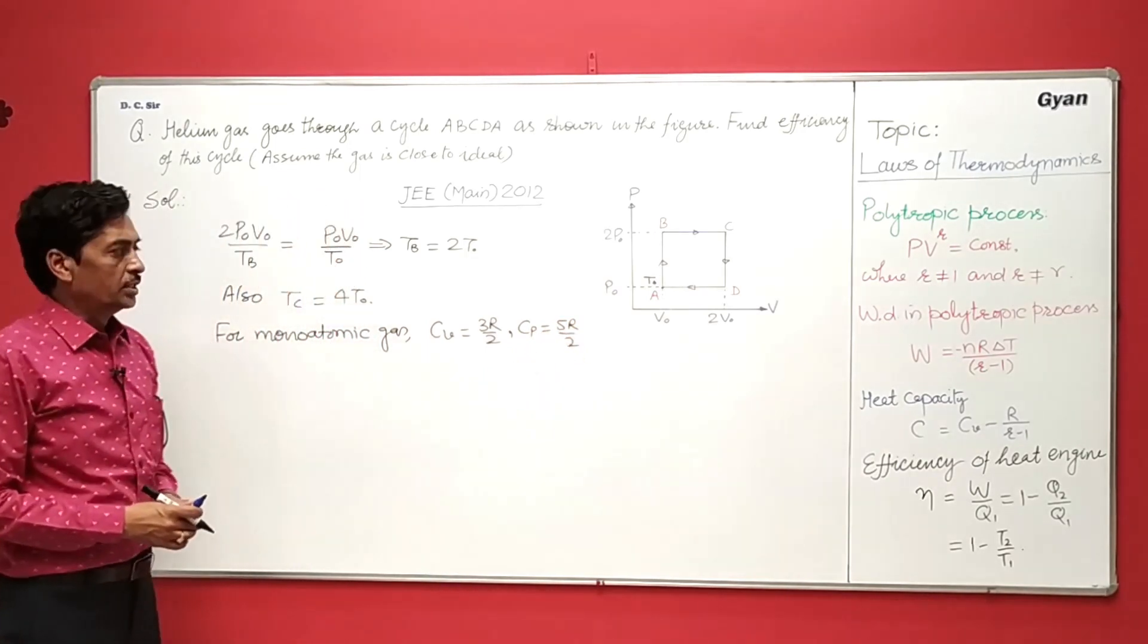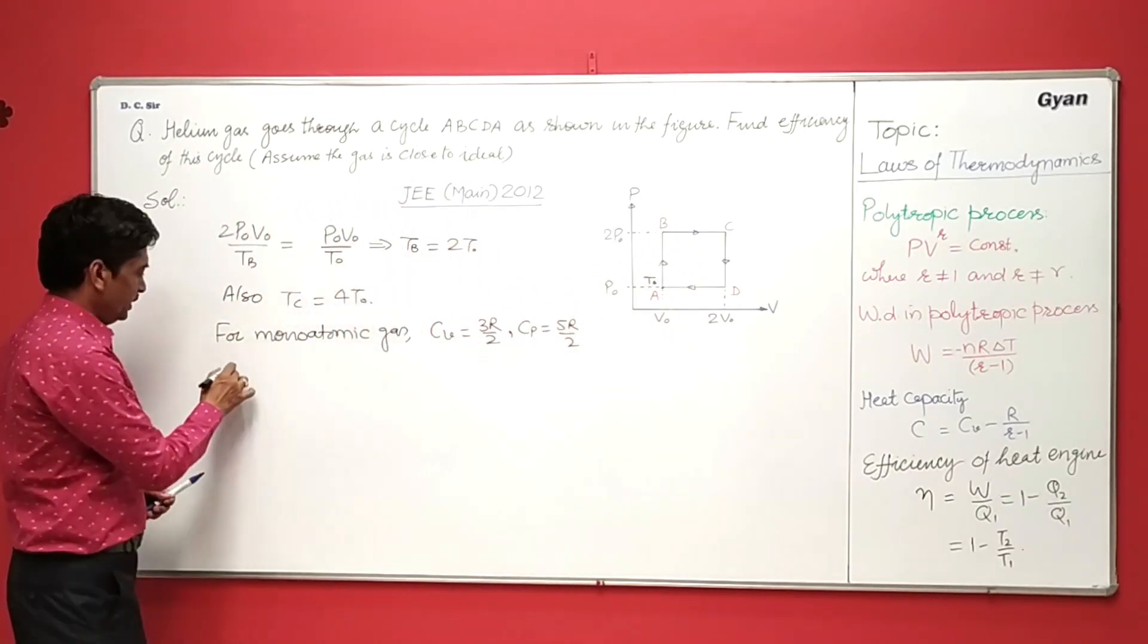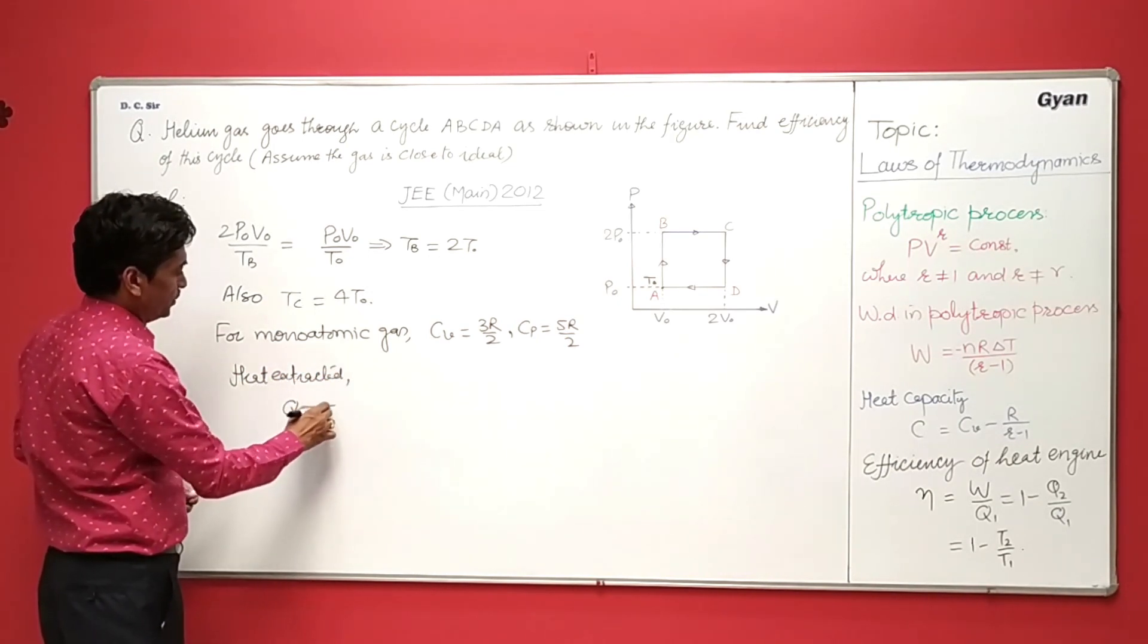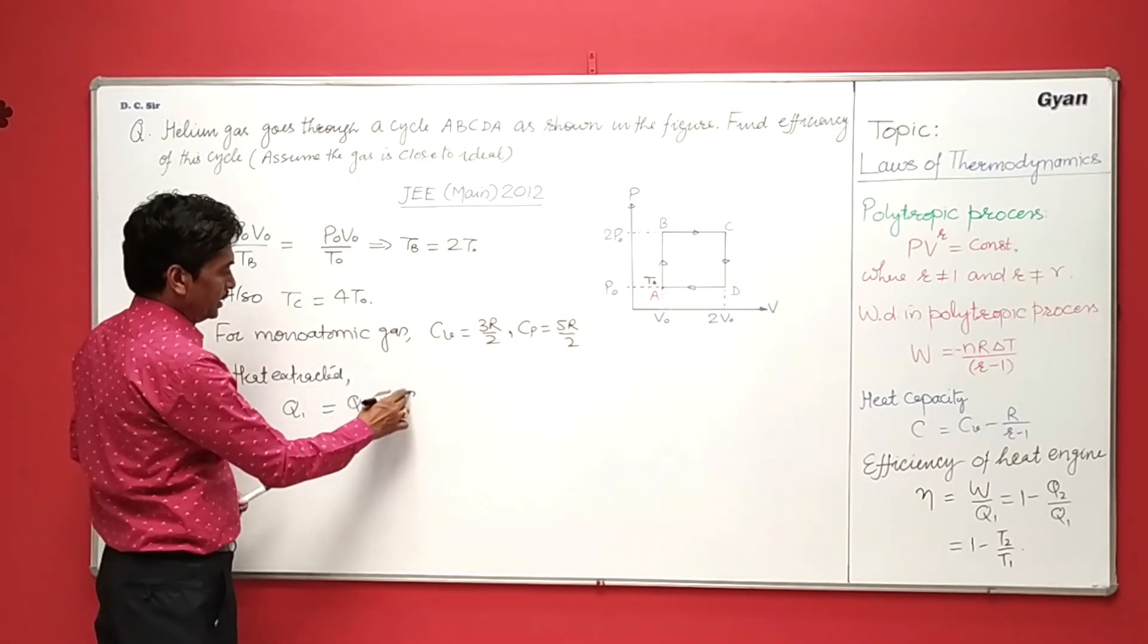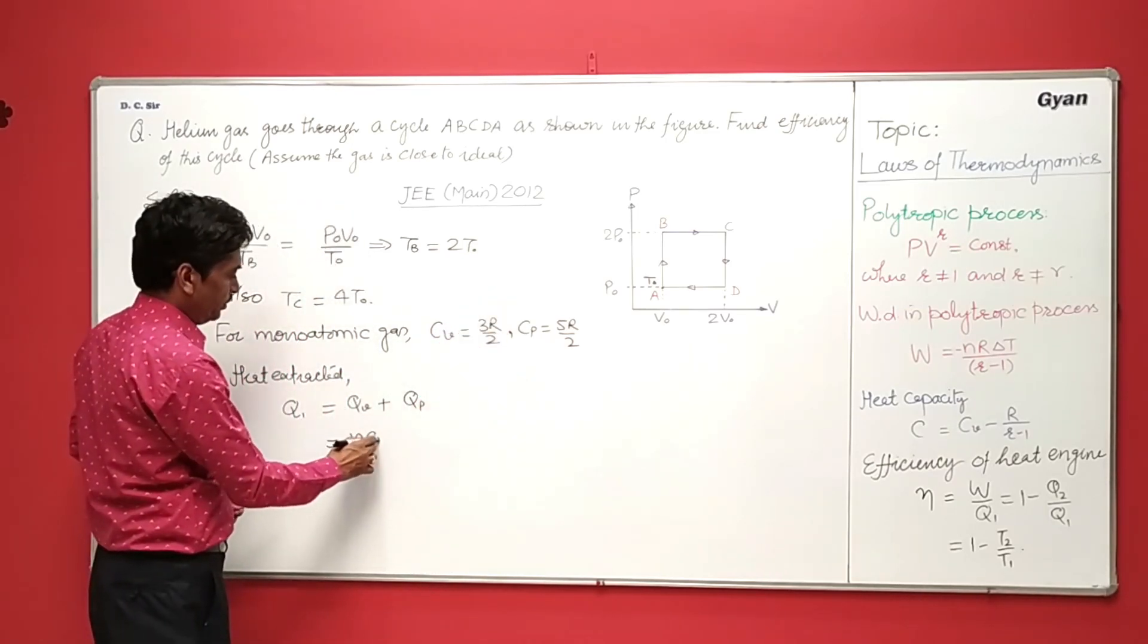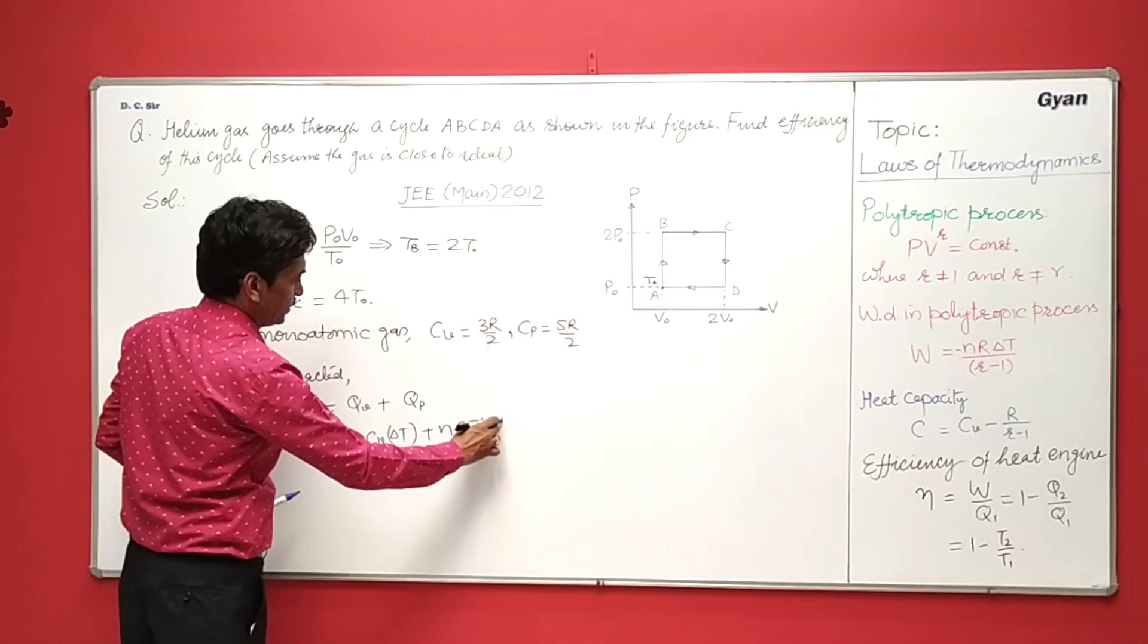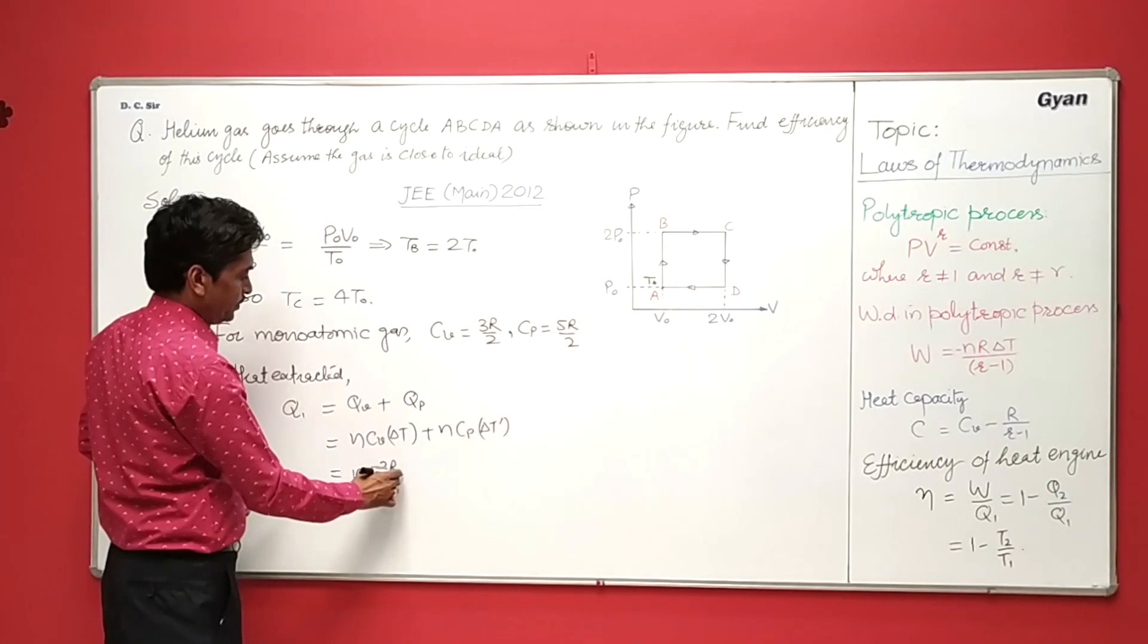Now to get the total heat absorbed in the process A to B and B to C, we can write heat absorbed Q1 is equal to, in this part A to B the process is isochoric and B to C is isobaric, so it will be NCv delta T plus NCp delta T dash. Now here is NCv, 3R by 2, delta T.